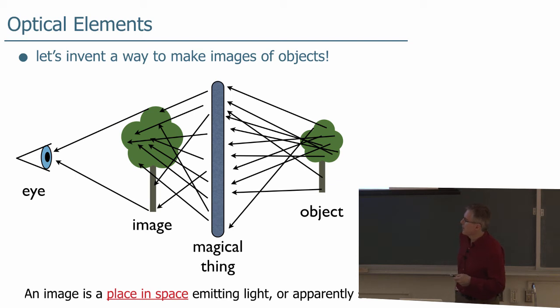So we're going to define an image as being a place, a location in space where light is coming from. A place in space emitting light or apparently emitting light. It looks like light is coming from that place in space if you have an image.